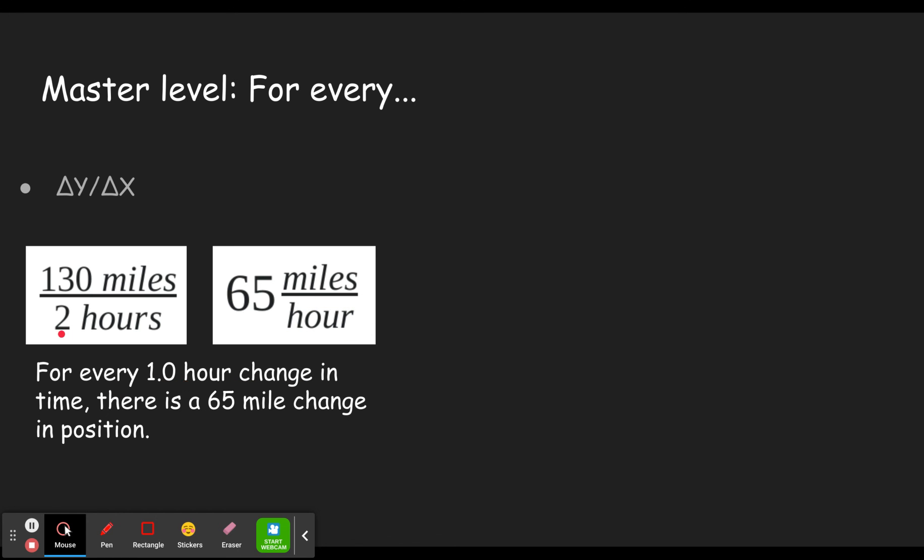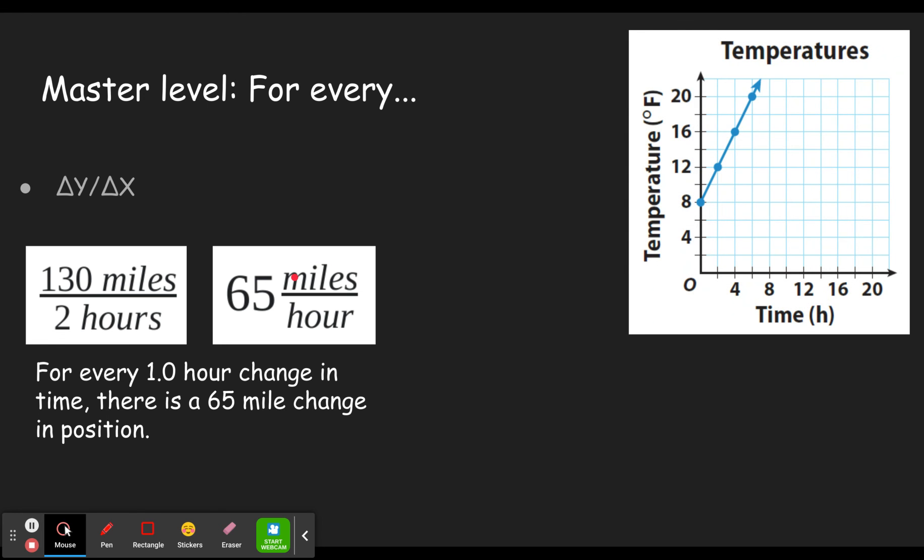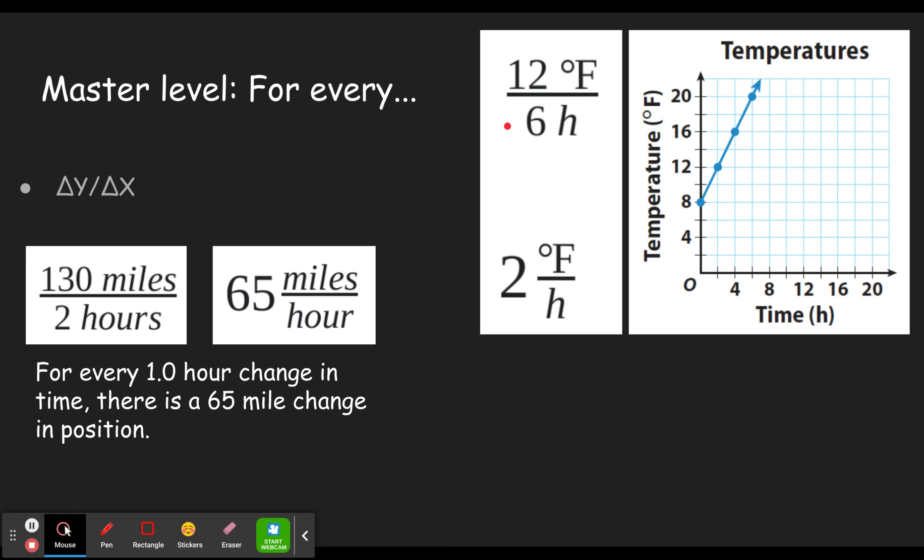So here's the phrasing they use in this concept builder: for every 1 hour change, so just take the thing in the denominator, for every one of those, because we've already divided so it's no longer 2, once you divide it's 65 over 1, okay? So for every 1 hour change in time, there is a 65 mile change in position. Okay, so for every, and then one of the denominator, there is this number, that change in position. Let's take a look at the graph here. Okay, so this graph is going to give you the change in y, so degrees Fahrenheit, divided by hours. Okay, so if you take 20 minus 8, so we're going to change from this point to this point, so 20 minus 8, it's changed positive 12 degrees Fahrenheit, and it did that in a change of 6 hours.